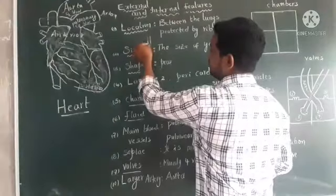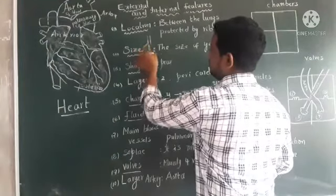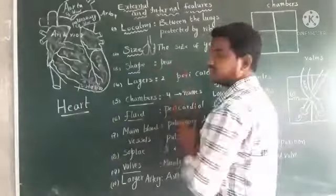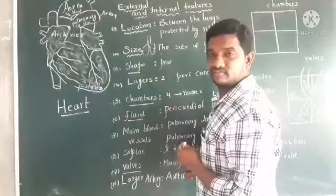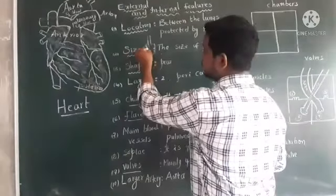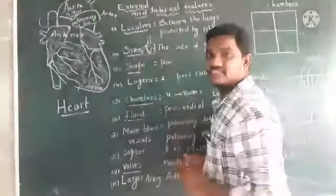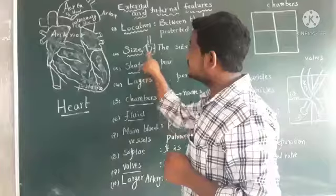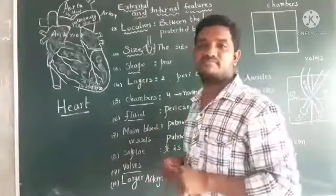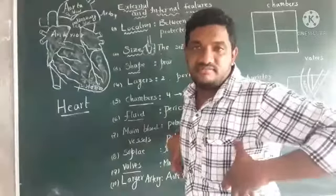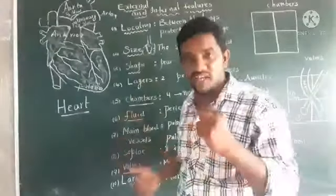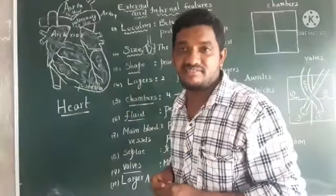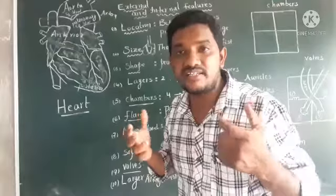This is the lungs. This is the right lung. This is the left lung. Between these two lungs, heart is present. This is the heart between the two lungs. It is protected by the ribcage. That is the first point — location.